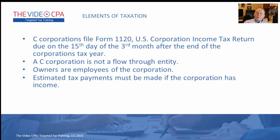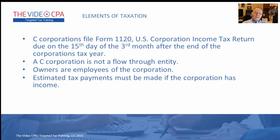C corporations file Form 1120, the US Corporate Income Tax Return. S corporations file Form 1120-S; C corporations just file the 1120. It must be filed by the 15th of March if your year-end is a calendar year-end, or the 15th day of the third month after the end of the corporate year for a non-calendar fiscal year. The corporation is not a flow-through entity, owners are employees, and you must pay estimated tax payments on a quarterly basis — you pay as you go.